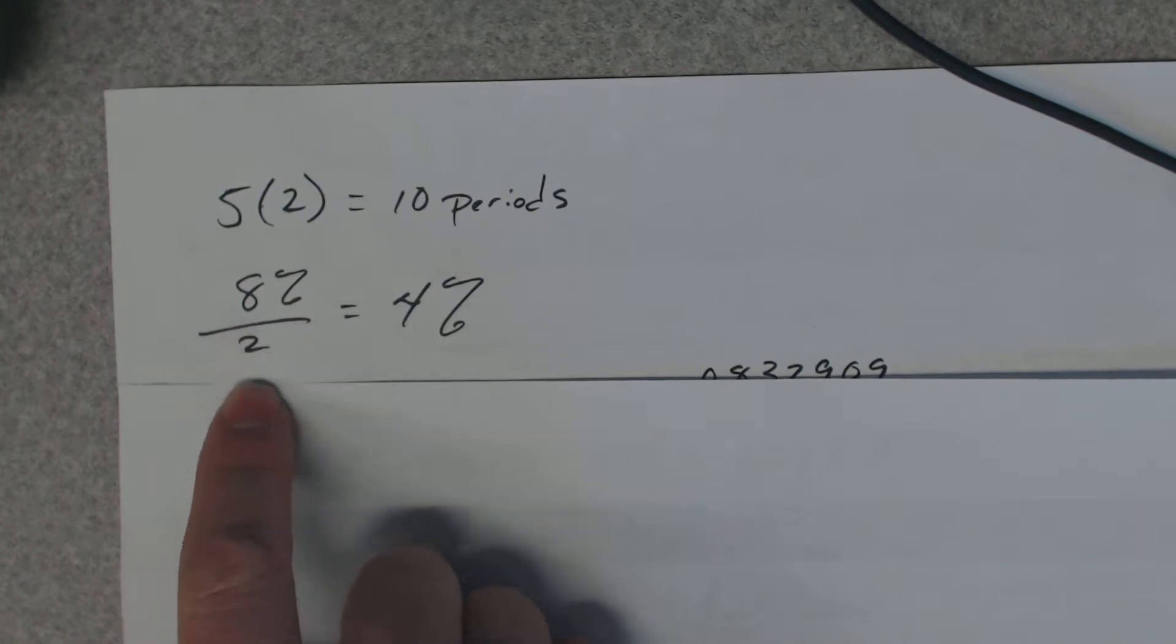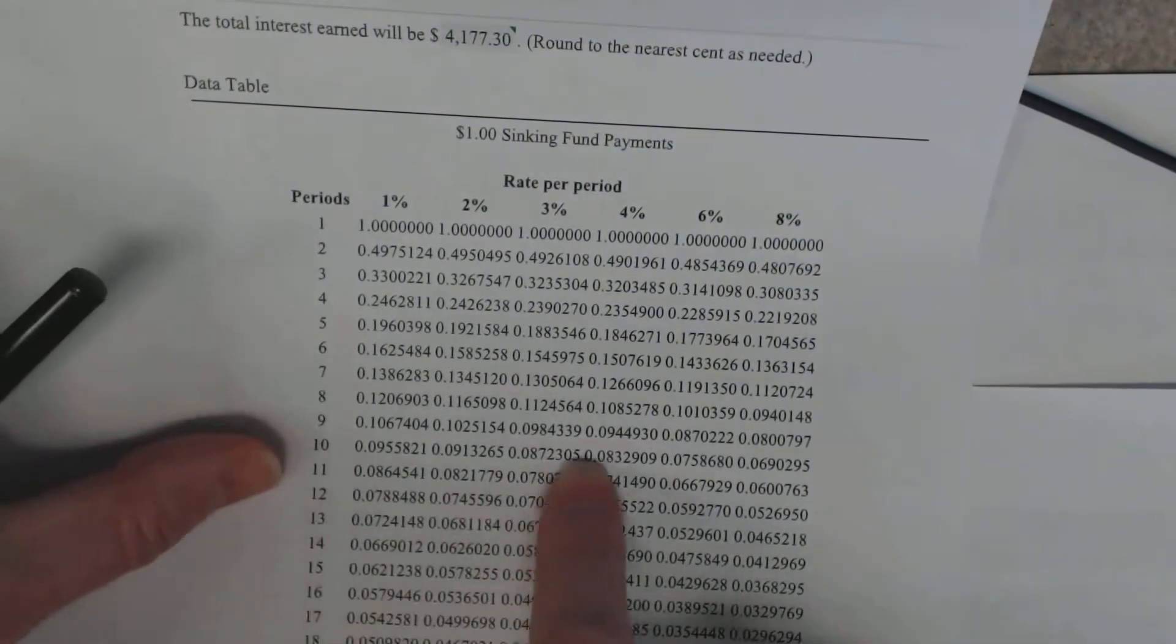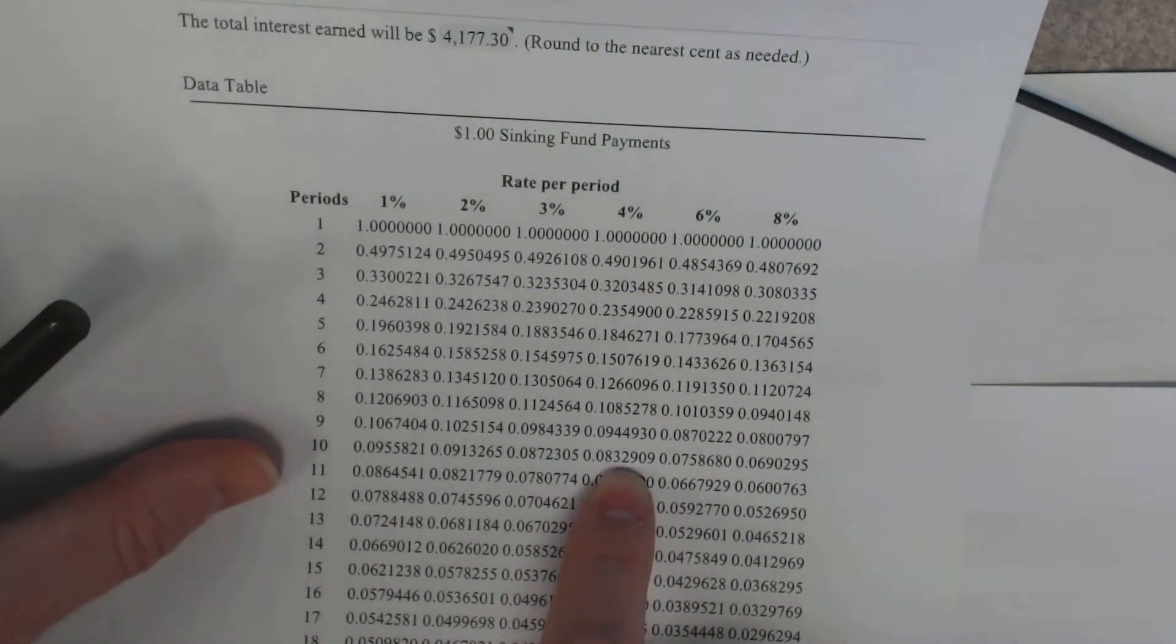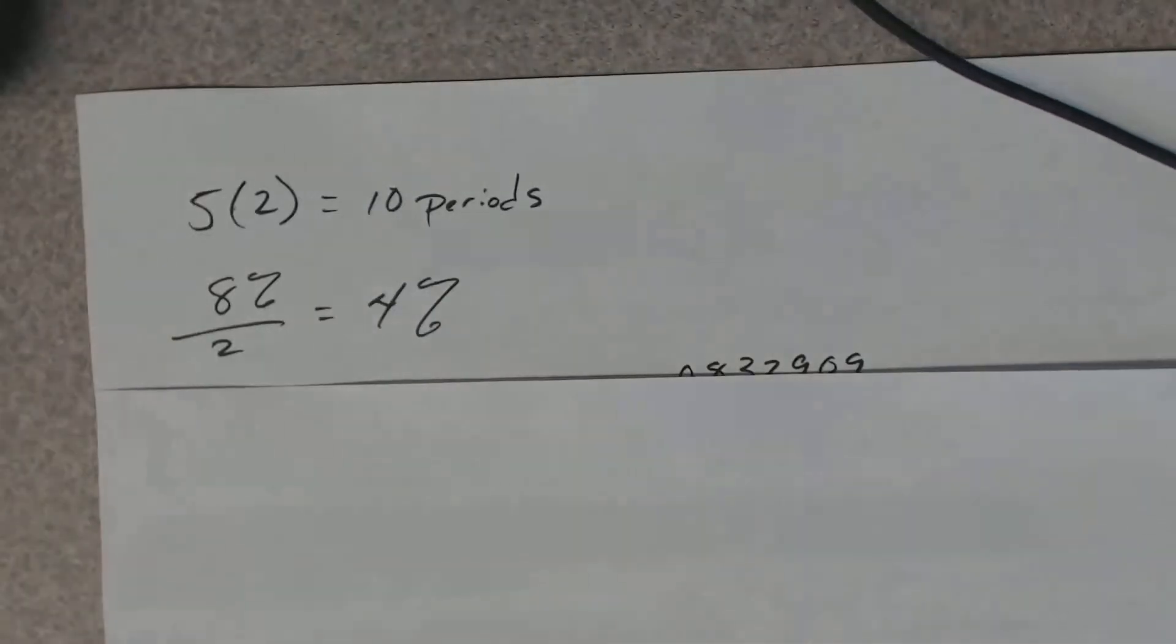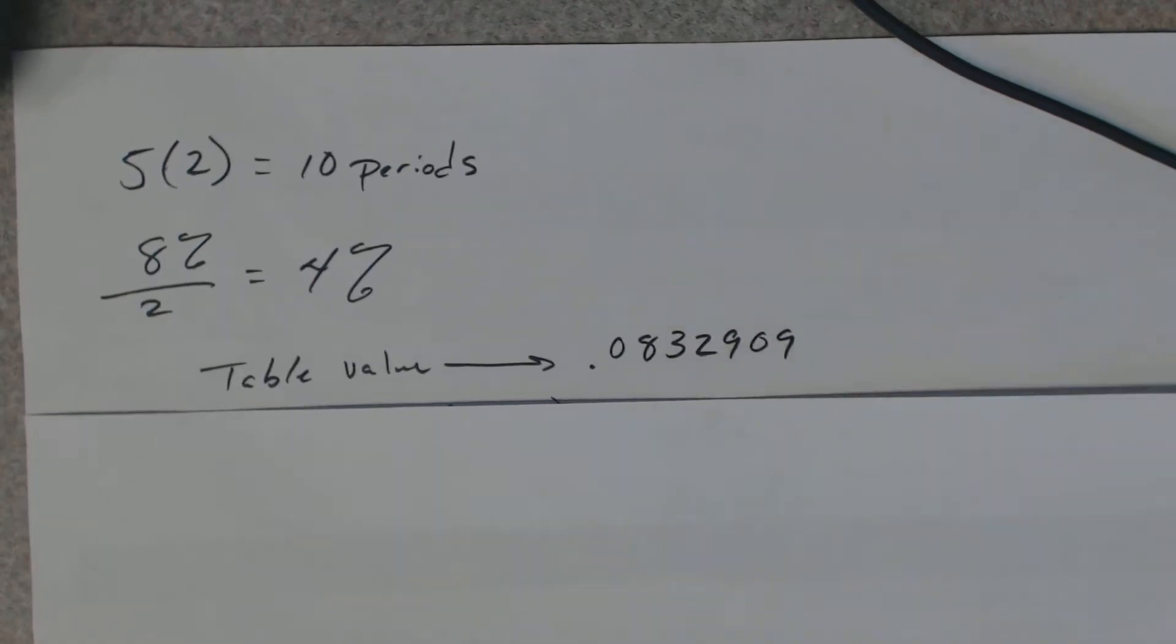Then it is 8% semi-annually. We're going to use the 4%. We go through the table here using 10 and 4. We get this 0.0832909. So we get a table value of 0.0832909.